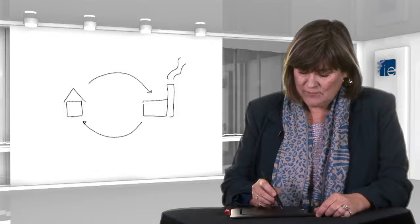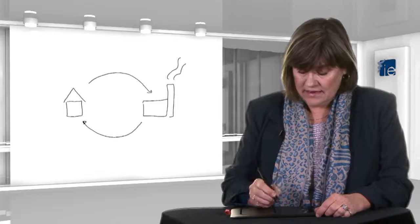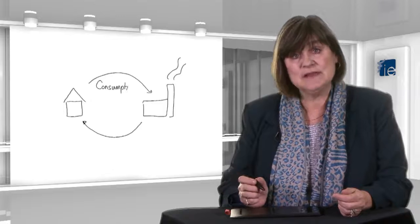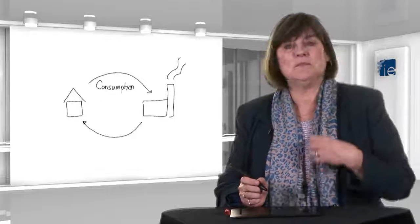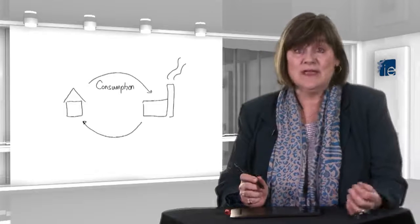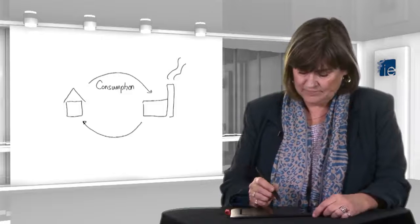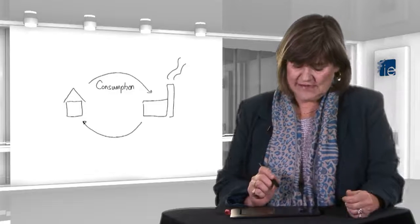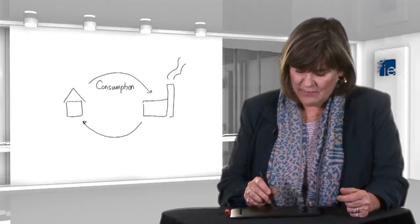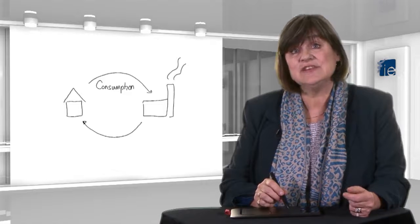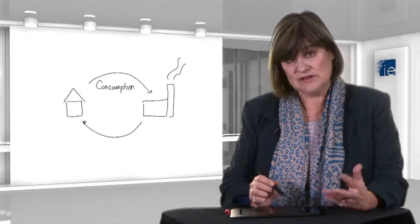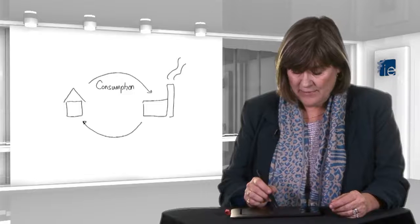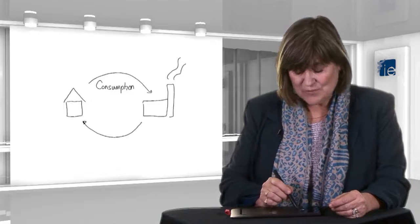What households buy from businesses is something we call consumption. And this is the biggest part of GDP. It's very stable. What people tend to buy in order to live is not going to fluctuate a lot over time. So if you look at this diagram and you think about that top arrow, which is the expenditures in the economy, so far it's just consumption.